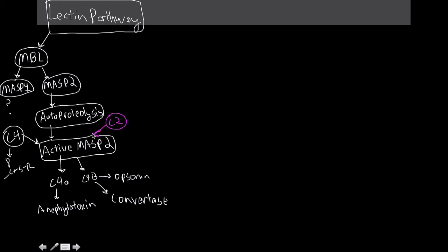whereas C4-beta is going to be an opsonin, and then it's also going to contribute to the formation of a convertase. The other molecule that we're going to deal with going in here to this active MASP2 is the C2 molecule. C2 comes in. It's going to be cleaved as well into C2-alpha,